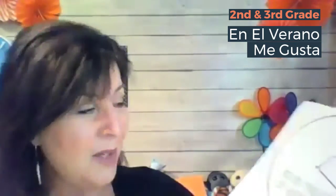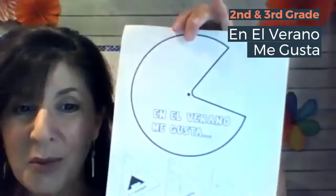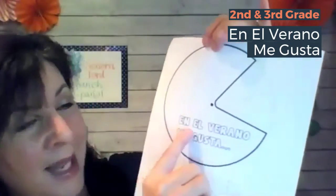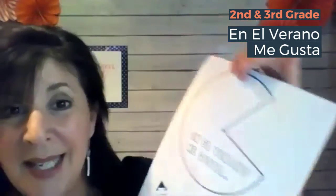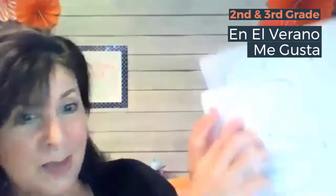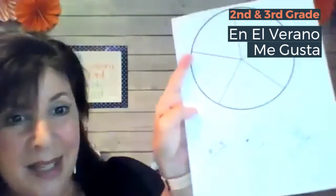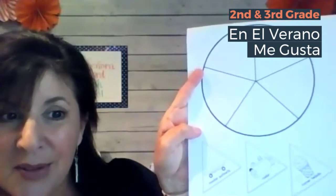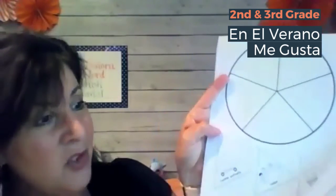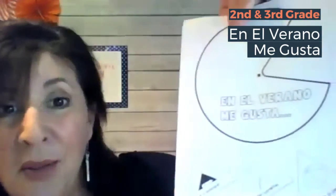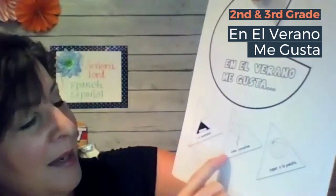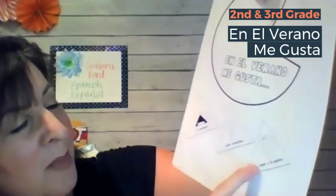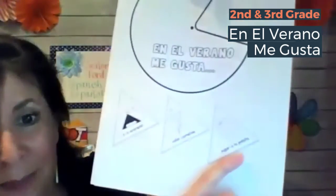So, what Ms. Ford is sending home with you this week is this little wheel. It says En el verano me gusta — In summer, I like to. What you get to do is cut this part out and lay it on top of this one that has these triangles. And where you see those triangles, you get to put in the things from our story — for example, ir acampar, volar cometa, jugar a la pelota. Those were all the things we just talked about.